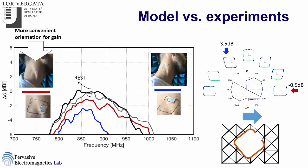A validation with measurements examines the orientation of the open ring antenna in two orientations. The black and gray curves show the rest condition gain. The red curve corresponds to the orientation for which numerical simulation predicted the smallest variation of gain — and indeed the variation is small. The blue curve corresponds to the configuration predicted as having the highest gain variation — confirmed by measurement. This validates the map for identifying the most convenient orientation between the antenna and the body.